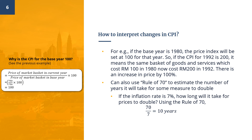We can also use the Rule of 70 to estimate the number of years it will take for some measure to double. If the inflation rate is 7%, how long will it take for prices to double? Using the Rule of 70, we divide 70 by the given inflation rate — that is, 70 divided by 7 — which gives us 10 years. So it will approximately take 10 years for prices to double if the current inflation rate is 7%.